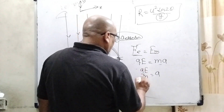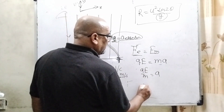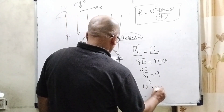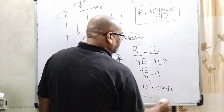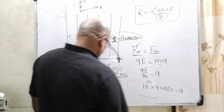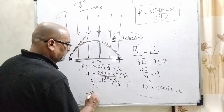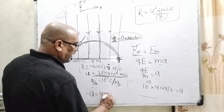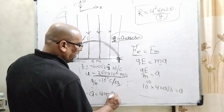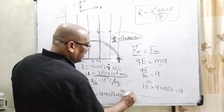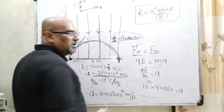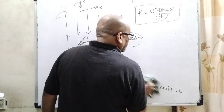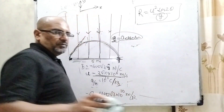Now substituting: q/m = 10¹⁰ and E = 400√3. So effective acceleration = 400√3 × 10¹⁰ meter per second squared. Now substitute this value into the range formula.